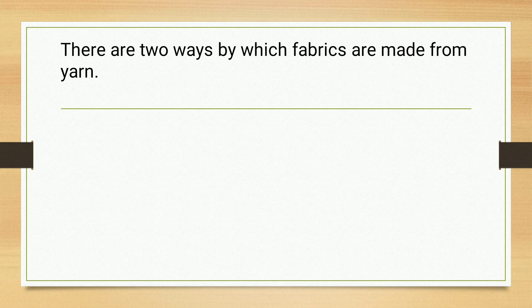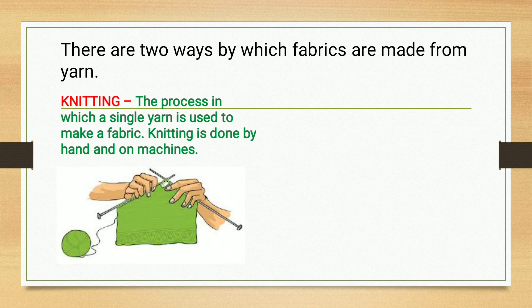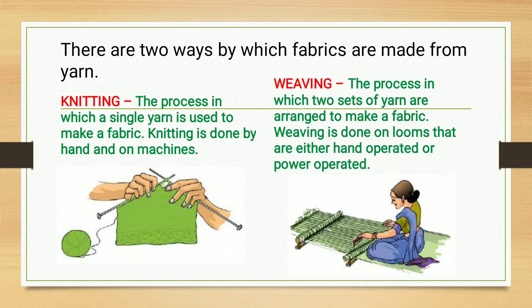There are two ways by which fabrics are made from yarns. First, knitting — the process in which a single yarn is used to make a fabric is called knitting. Knitting is done by hand or on machines. Second, weaving — the process in which two sets of yarn are arranged together to make a fabric is called weaving. Weaving is done on looms that are either hand operated or power operated.